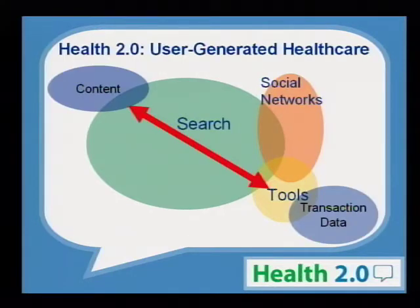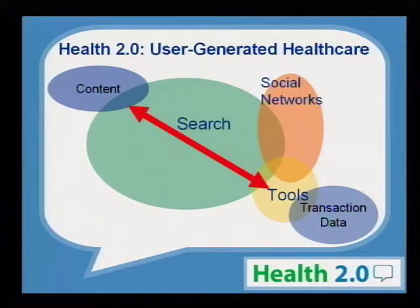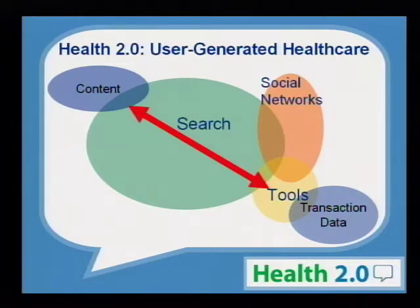Coming back to our framework, Matthew and I at the Health 2.0 conference think of various bubbles. We think of search — basically the task of finding information about health questions. Social networks, which we'll talk about and their evolution from 2007 to today. Tools — online interactive components that may be on your iPhone or in a device — ways of engaging and doing transactions around healthcare. Ultimately these components connect to allow content and static information to be connected to transactions in the actual business of healthcare.